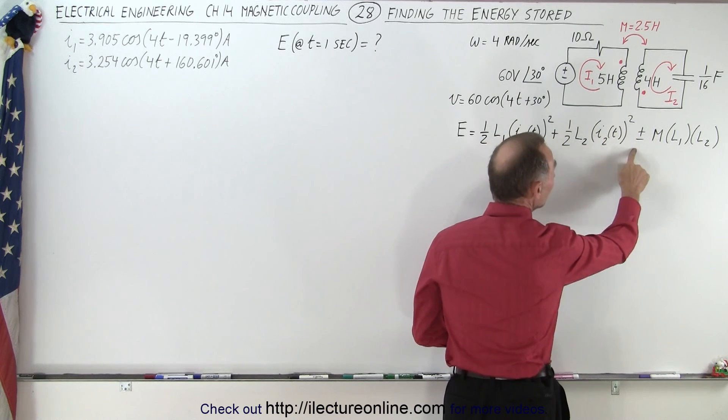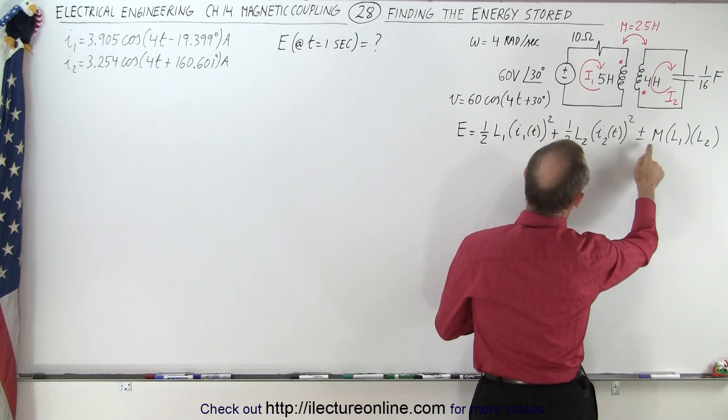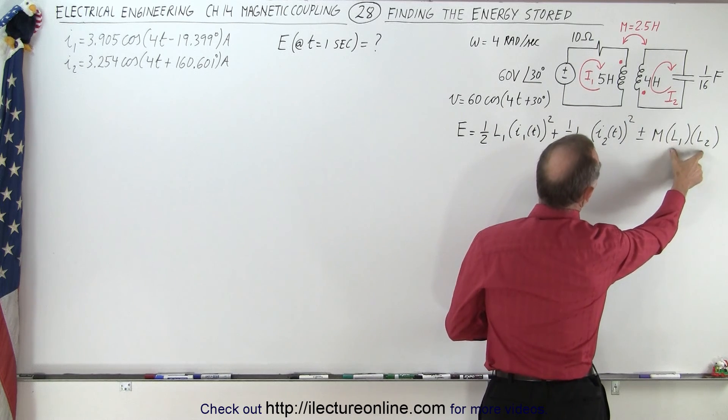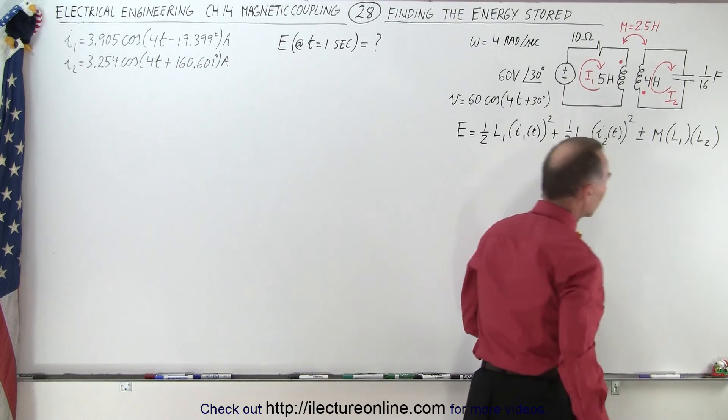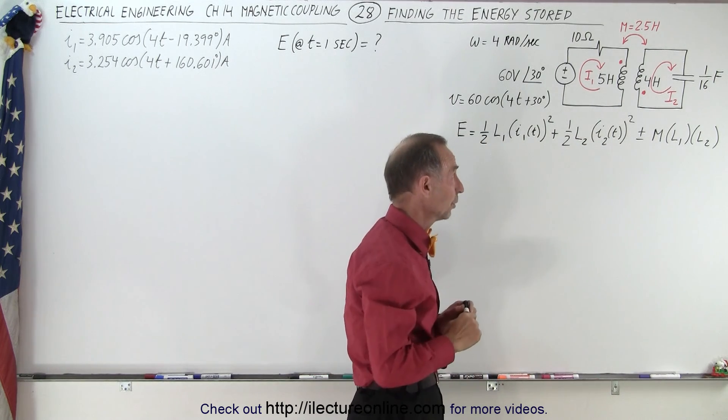Plus one half the second inductor times the current through that inductor quantity squared at that moment in time, plus or minus the mutual inductance or the mutual coupling times the product of the inductance of the first inductor and inductance of the second inductor. Now what about the plus or minus, because that is very important.